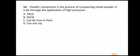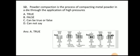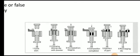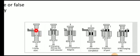Next question: Powder compaction is the process of compacting metal powder in a die through the application of high pressure. The answer is true. Whenever we want to compact the powder to get the final product, we manufacture a die with the same shape, pour the powder, and then it is compacted. Here you can see the compaction process — the powder is poured into the die and compacted to get the final product.